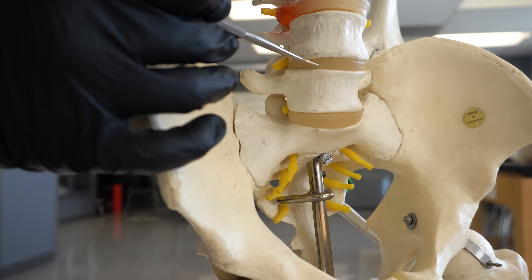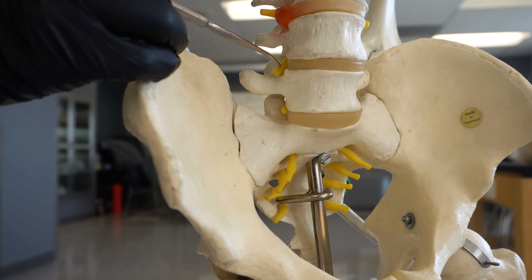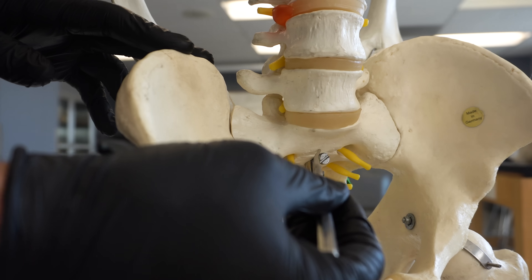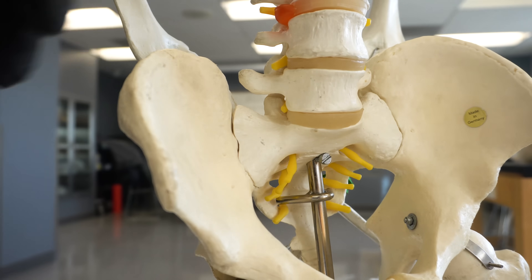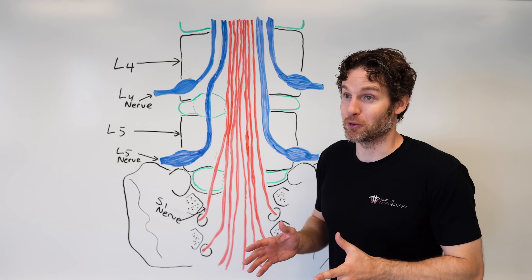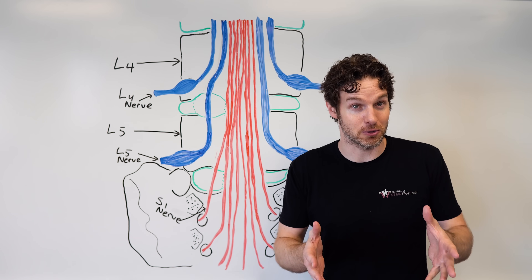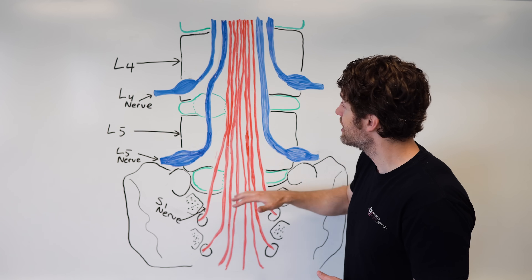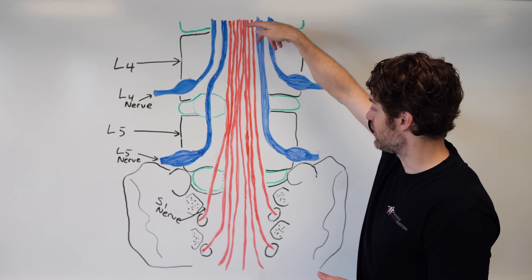There are two important questions to address. First, why does a herniation at the L4 disc typically affect the L5 nerve rather than the L4 nerve? Second, how can sacral spinal nerves be compressed when there are no discs in the sacrum? The answer involves developmental anatomy. This picture shows a posterior view of the lower spine with the L4 vertebra, L5 vertebra, and sacrum, with lumbar nerve roots shown in blue and sacral nerve roots in red. In an adult, the spinal cord actually ends at L1-L2 — it doesn't extend all the way down to match each vertebral level.